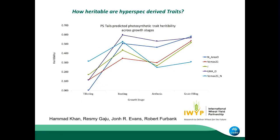Also, collaborators in Australia and CIMMYT through the International Wheat Yield Partnership found with reflectance some traits with higher heritability, mainly at booting. The advantage of quicker tools is that you can know when is the best time to measure, and probably come back even with the LiCor — but now you're more focused and you know what to do.